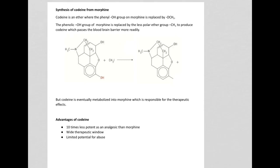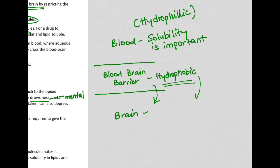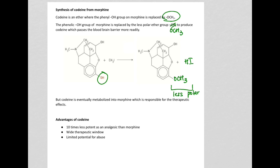Codeine is a version of morphine where one of the hydroxyl groups is replaced by an ether group, OCH3. This OCH3 group is less polar than the OH group. Because it's less polar, it passes the blood-brain barrier more easily. It's less polar, so it's more hydrophobic, so it passes the blood-brain barrier more easily.